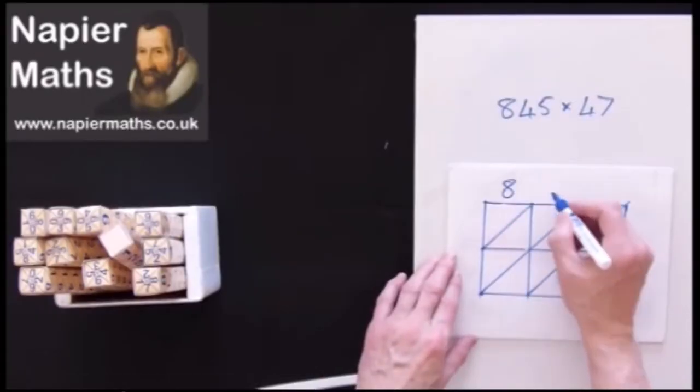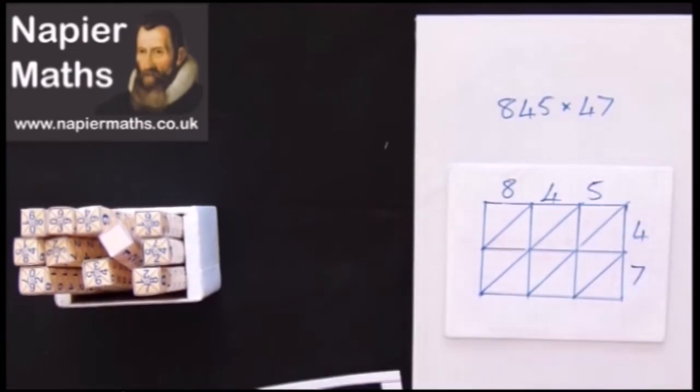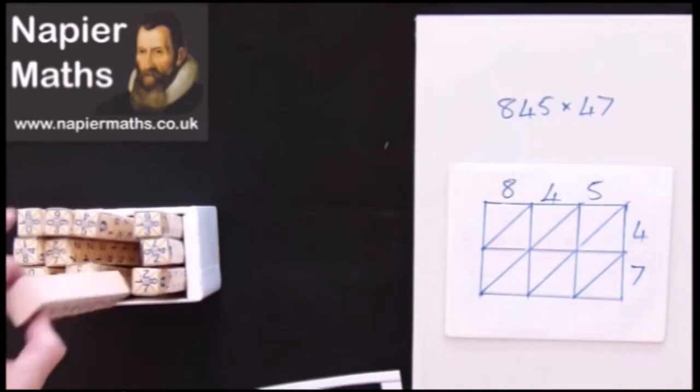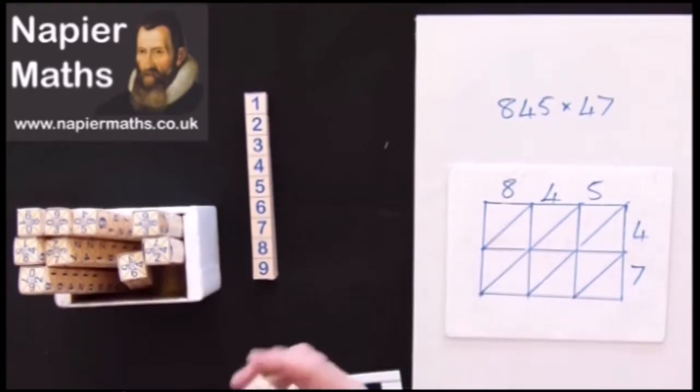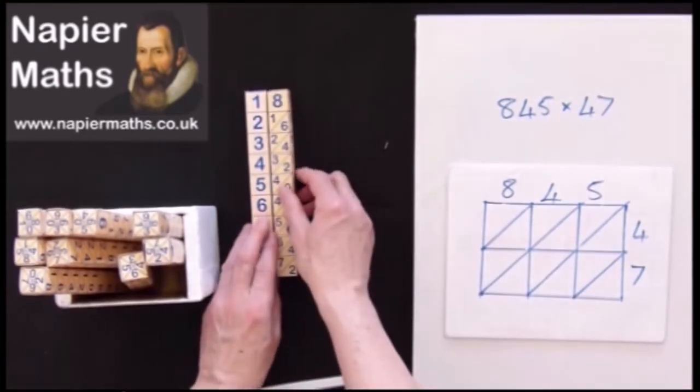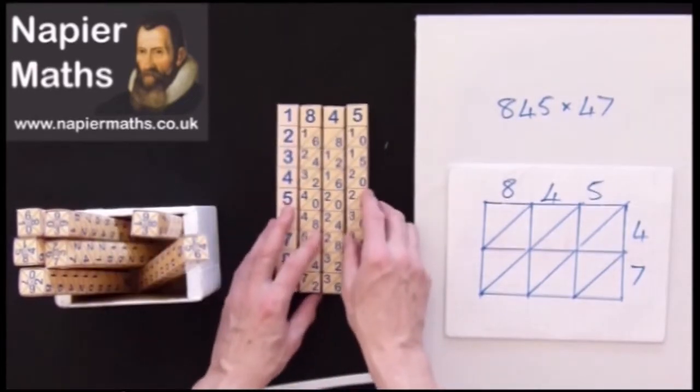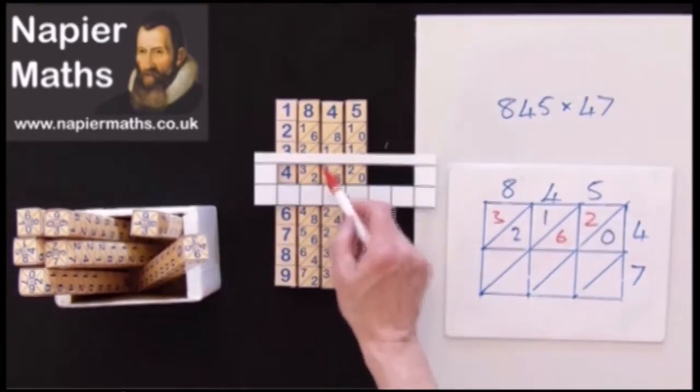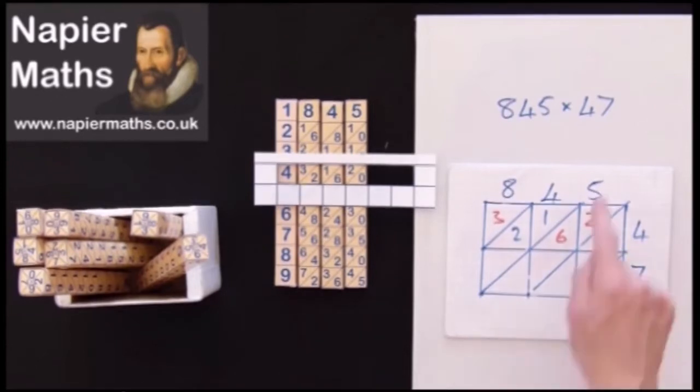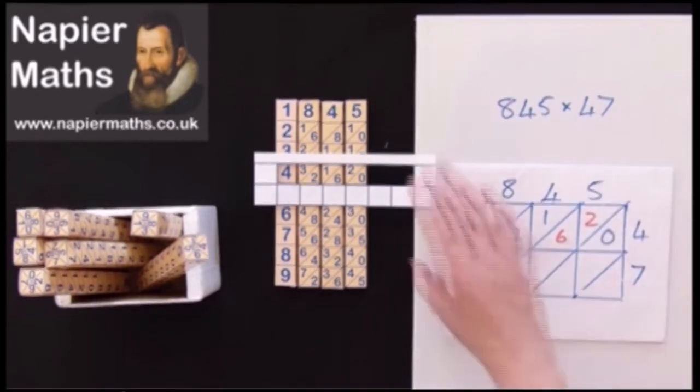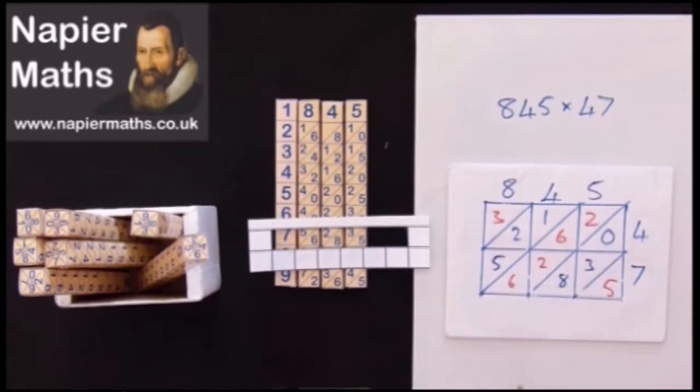We're multiplying 845 by 47. Now to get the bones, we'll need to get an 8, a 4 and a 5. You can see 3, 2, 1, 6, 2, 0 is what you'd do. And we now need the units, which is 7, so it's just 5, 6, 2, 8, 3, 5.